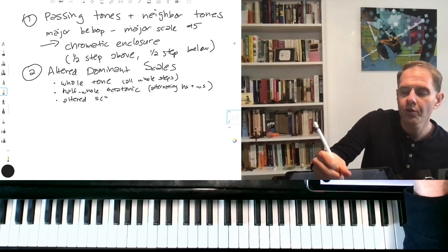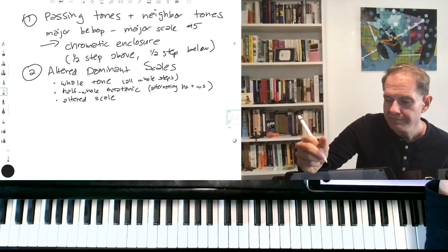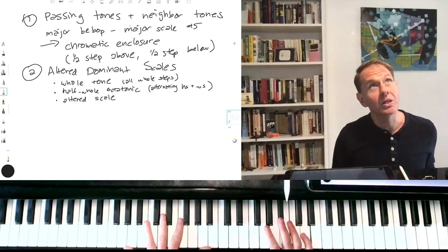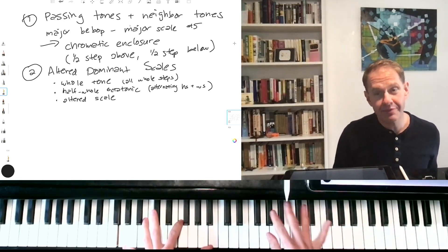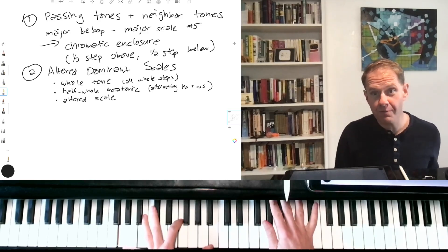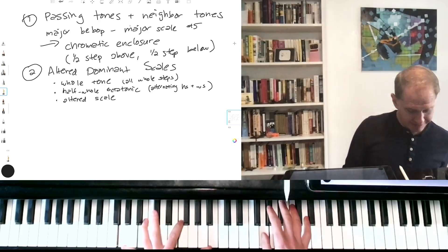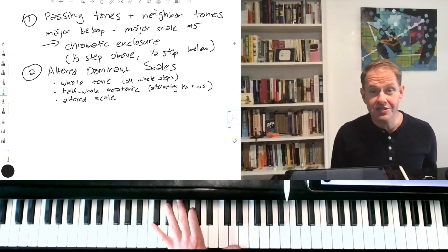Or we've got what I call the altered scale, which other people call the super-locrian scale or the diminished whole-tone scale. And this one's a little bit complicated to get into, but it's like the melodic minor scale a half-step above. So for our G7, it'd be like playing the ascending form of A-flat melodic minor.